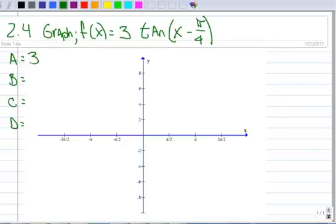So a is 3, b is 1, c is a positive pi over 4, and sometimes when I do a positive there, I like to put a little right arrow to remind myself that it moves to the right. And d is 0.